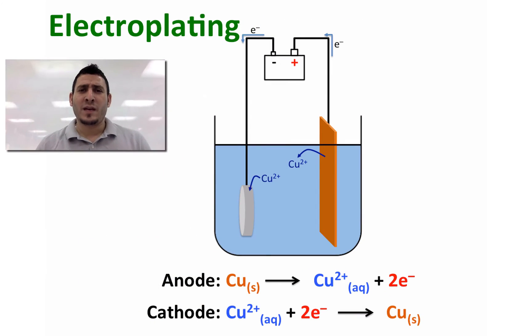Consider the following electrolytic cell where a ring is being plated with copper atoms. The copper electrode represents the anode where oxidation is happening, and the ring represents the cathode where reduction is happening. Both are immersed in a copper solution.